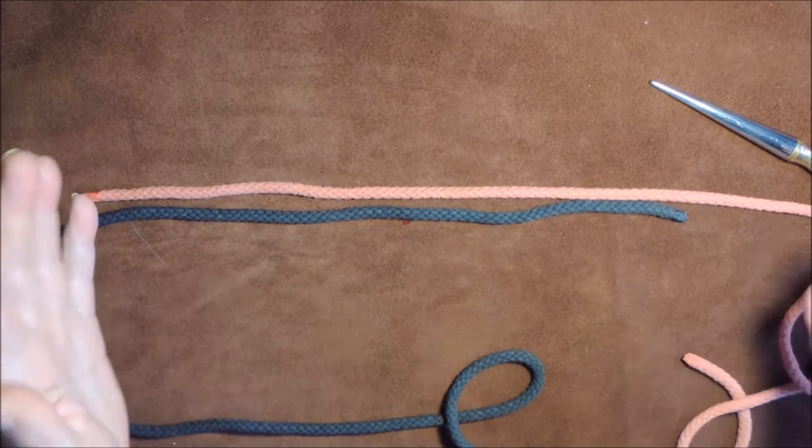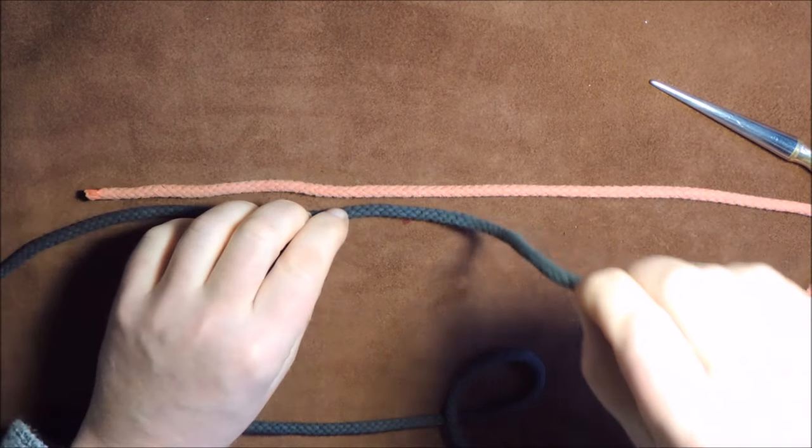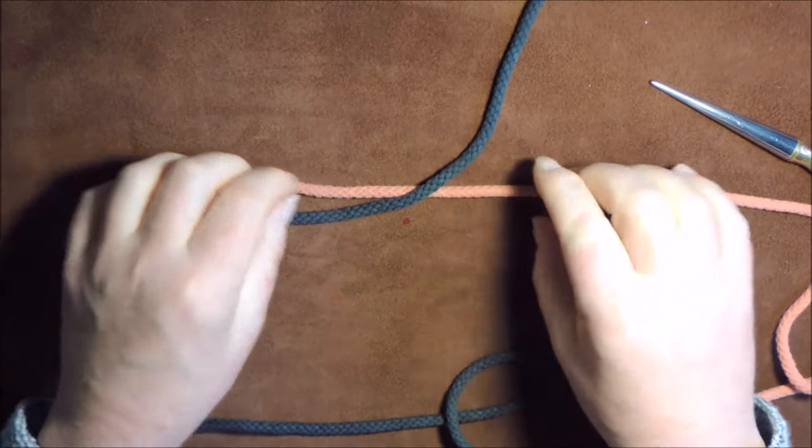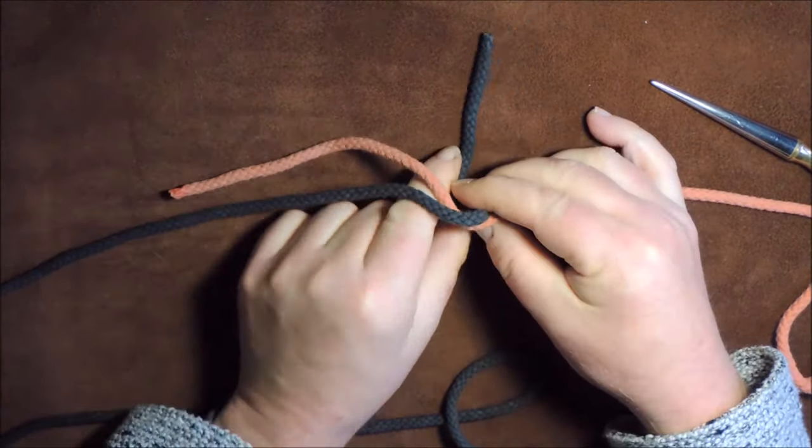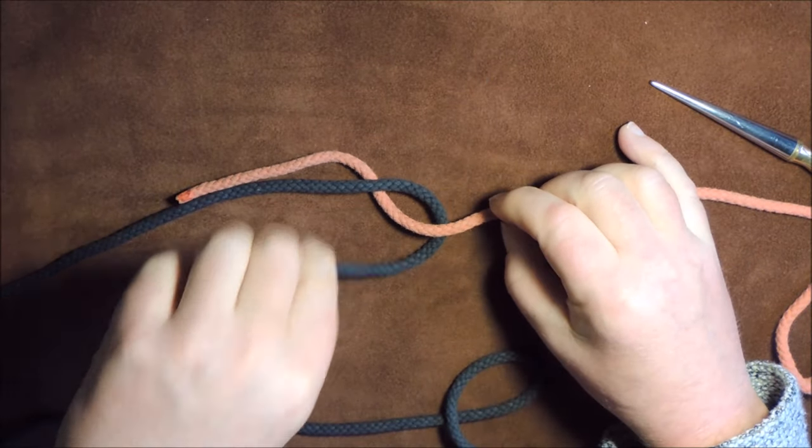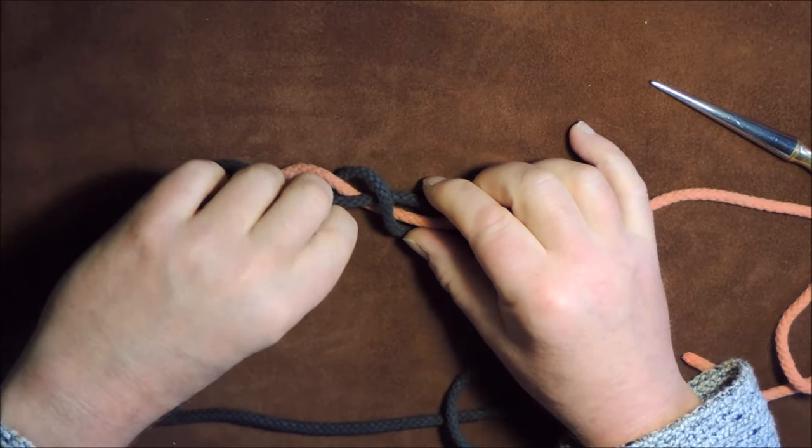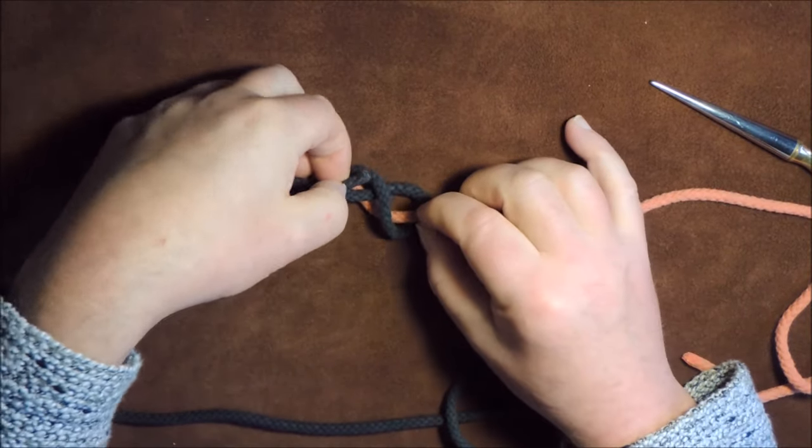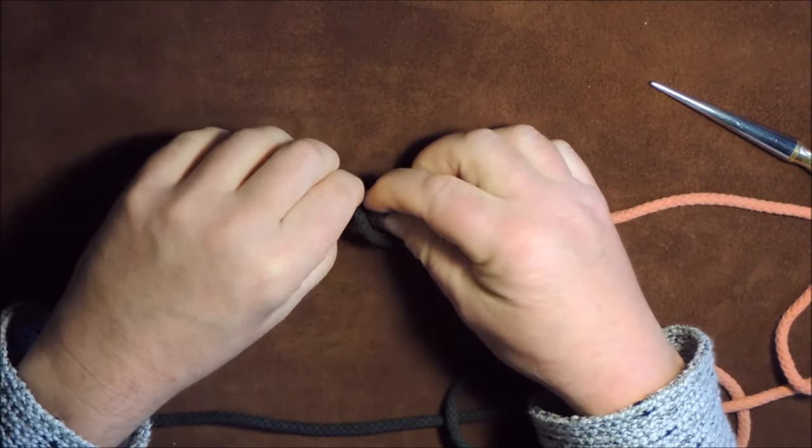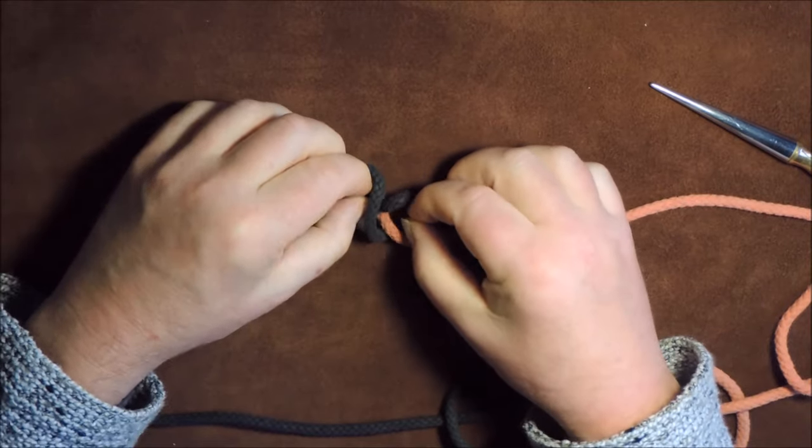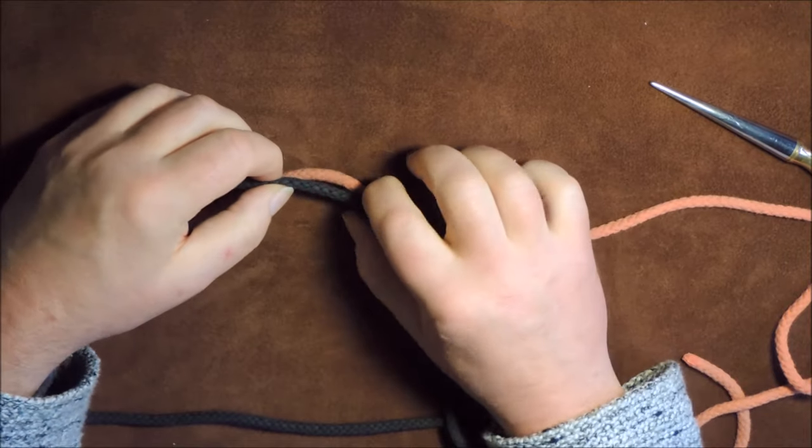So all we do is we do the single knot but we double it. So what I'll do is I'll take the black cord here now and I will go over the orange cord and then I'm going to wrap it round, go round like so once and then over again twice like so and then bring it up so it runs down the middle like so. A bit tricky and then just pull it up.